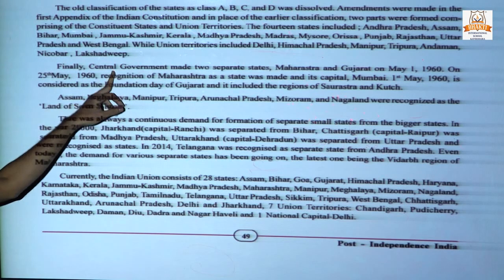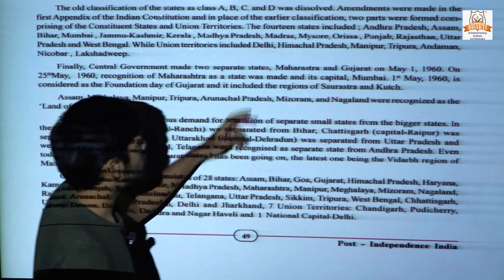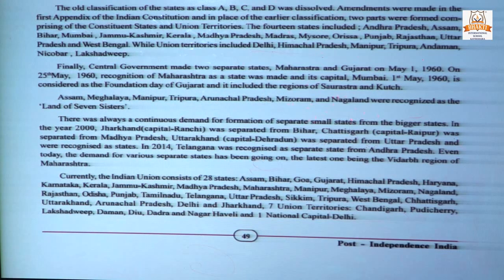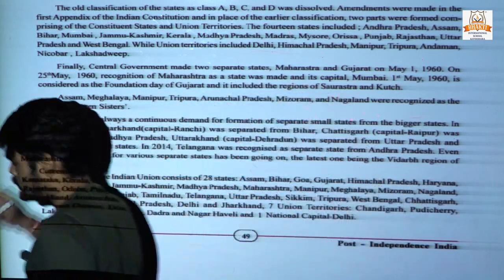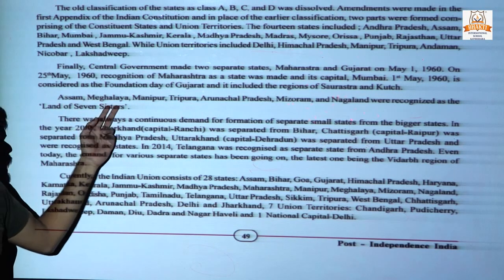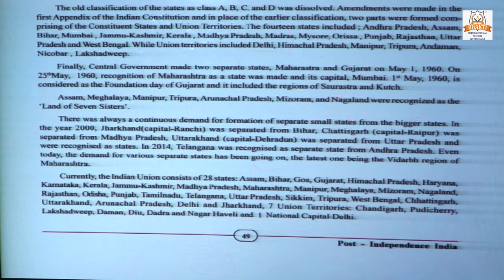Finally, the central government made two separate states on the basis of the bilingual state demand: Maharashtra and Gujarat. Gujarat was established on May 1, 1960, and every year May 1st is considered Gujarat Establishment Day. Assam, Meghalaya, Manipur, Tripura, Arunachal Pradesh, Mizoram, and Nagaland were reorganized as the land of seven sisters — today we consider these whole states as the seven sisters.